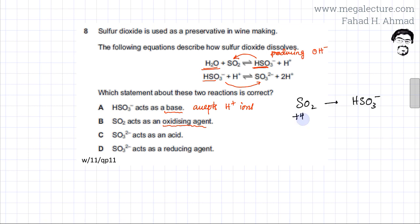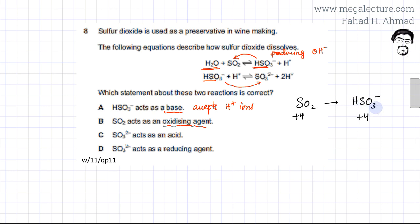For SO2 to act as an oxidizing agent it must get reduced. The oxidation state of sulfur in SO2 is +4 (since oxygen is −2). In HSO3⁻, sulfur is also +4: oxygen contributes −6, hydrogen contributes +1, giving a net charge of −1, so sulfur must be +4. No oxidation or reduction is occurring, so statement B is definitely wrong.